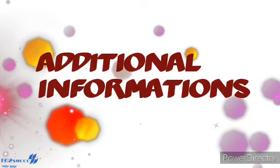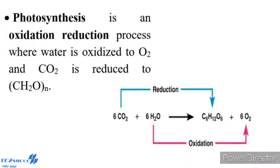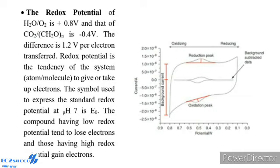Additional information: Photosynthesis is an oxidation-reduction process where water is oxidized and carbon dioxide is reduced to CH2O. The redox potential of H2O/O2 is +0.8V and that of CO2/CH2O in carbohydrate is -0.4V. The difference is 1.2V per electron transferred.